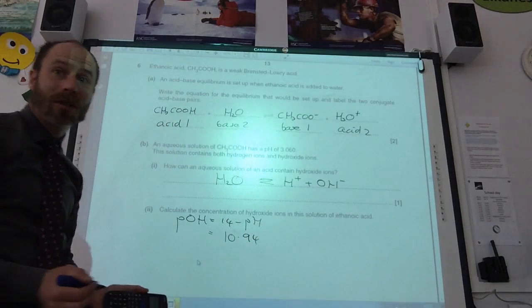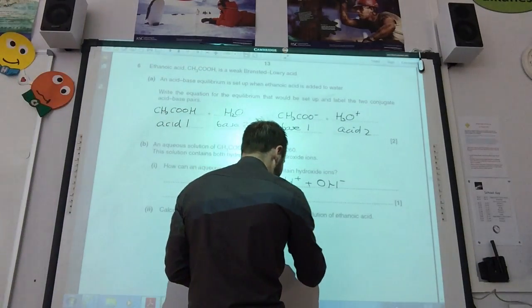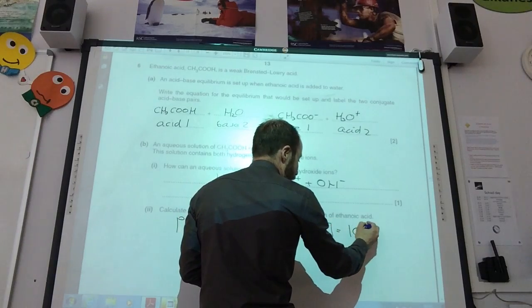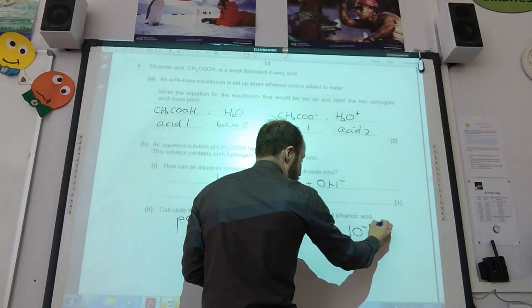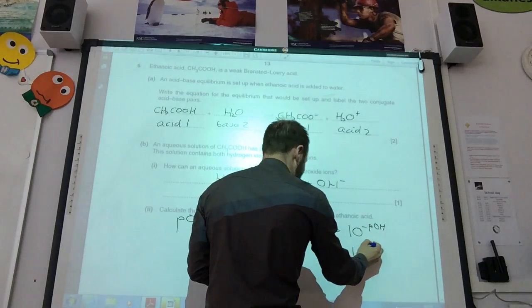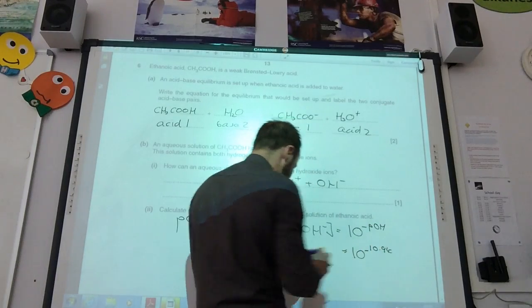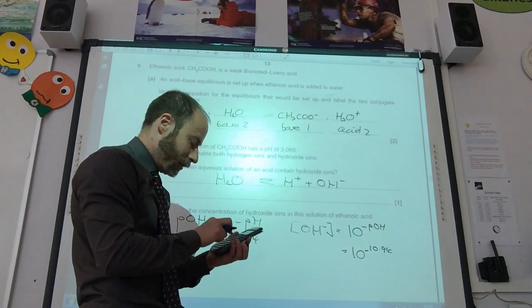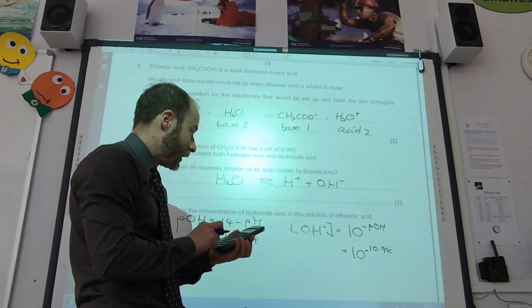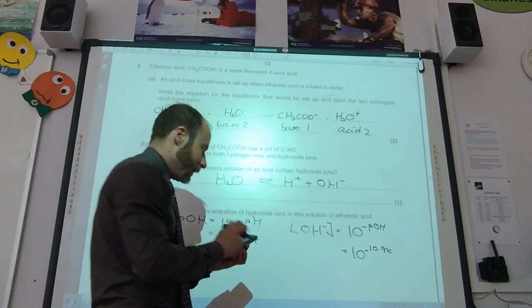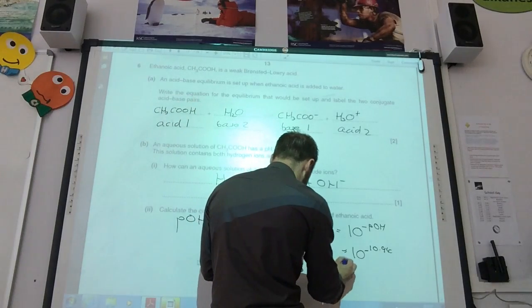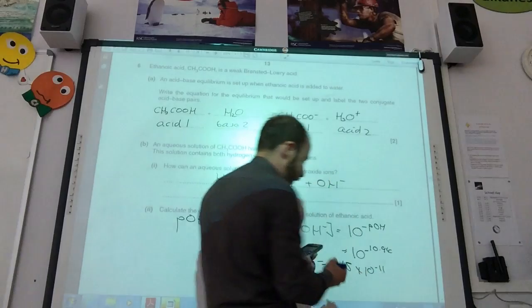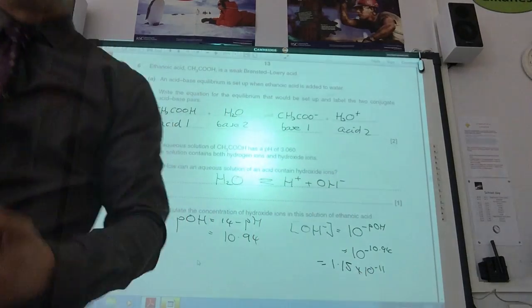Once I've got the POH, I can work out my concentration of OH-, which is 10 to the minus POH, which is 10 to the minus 10.94. That comes to 1.15 times 10 to the minus 11 moles per decimetre cubed.